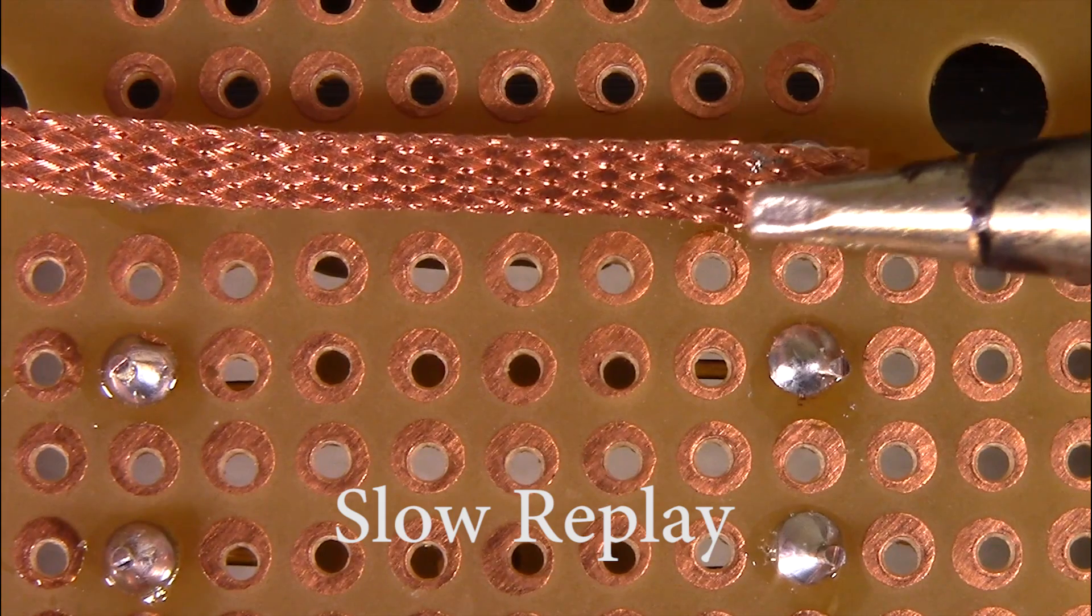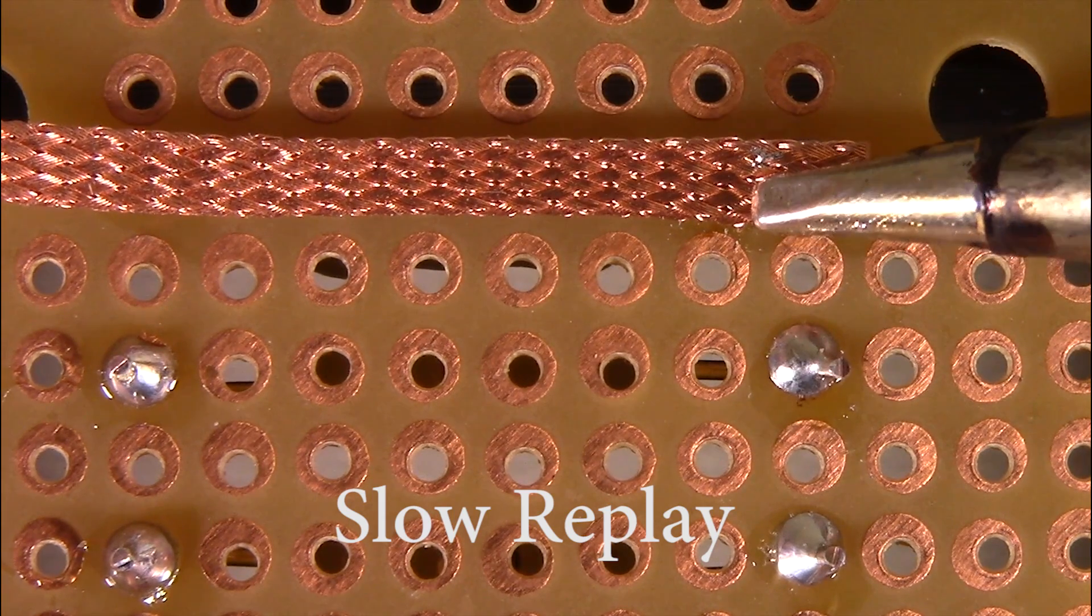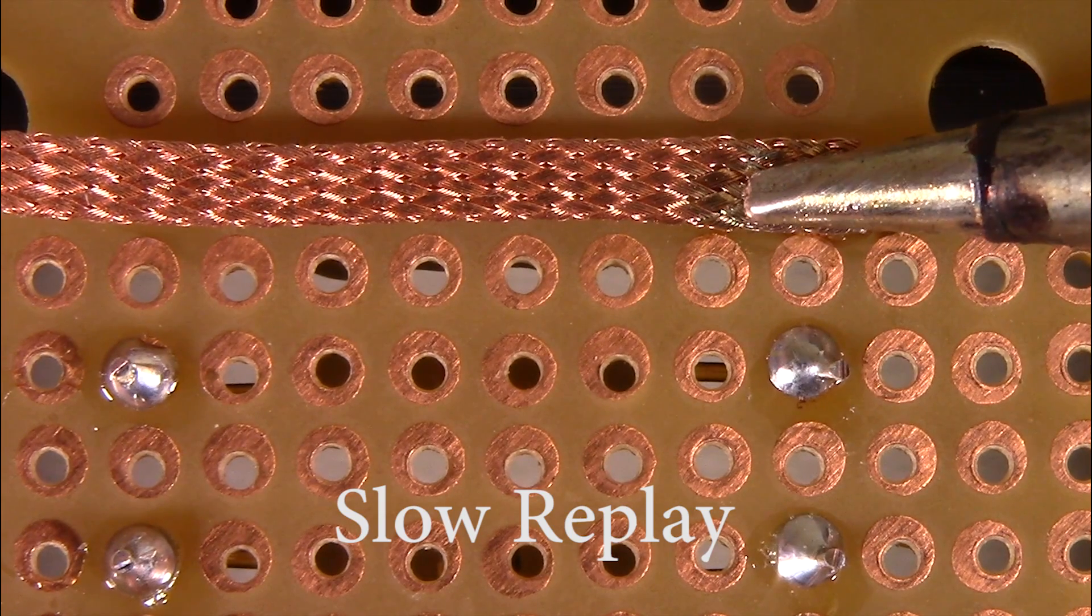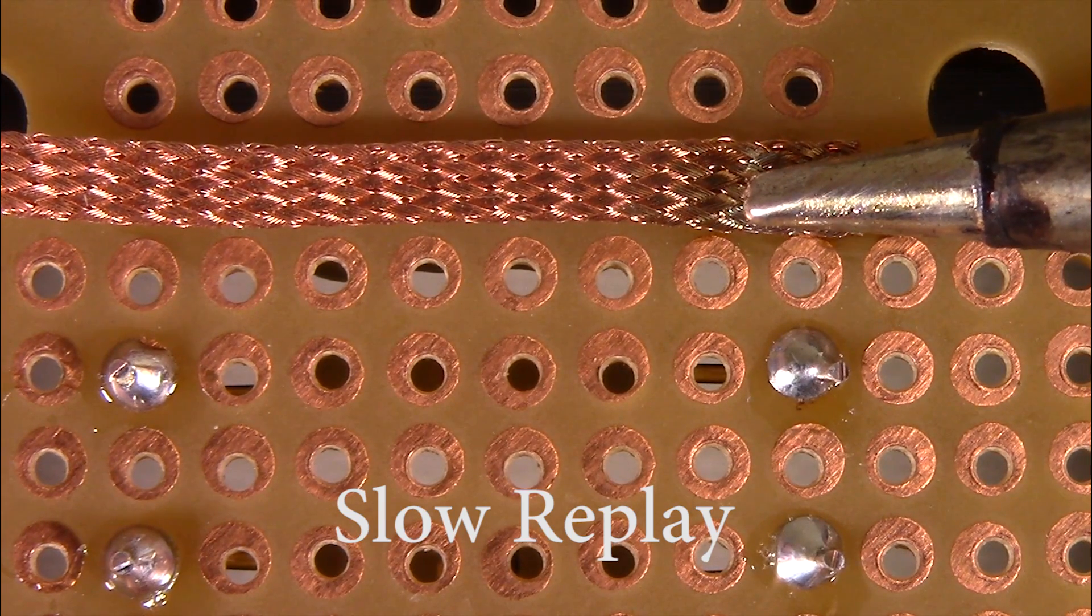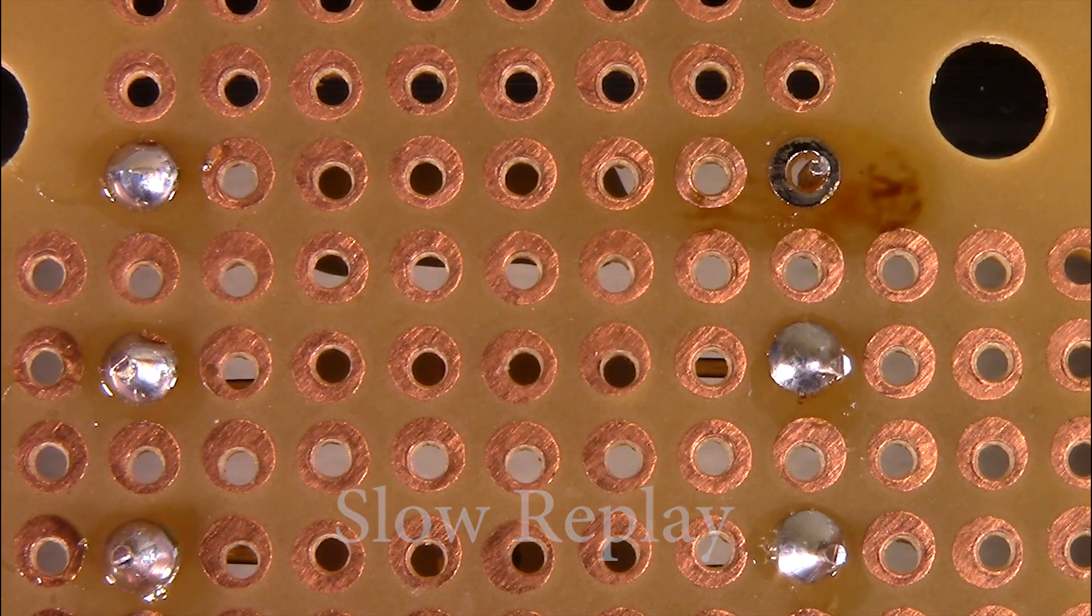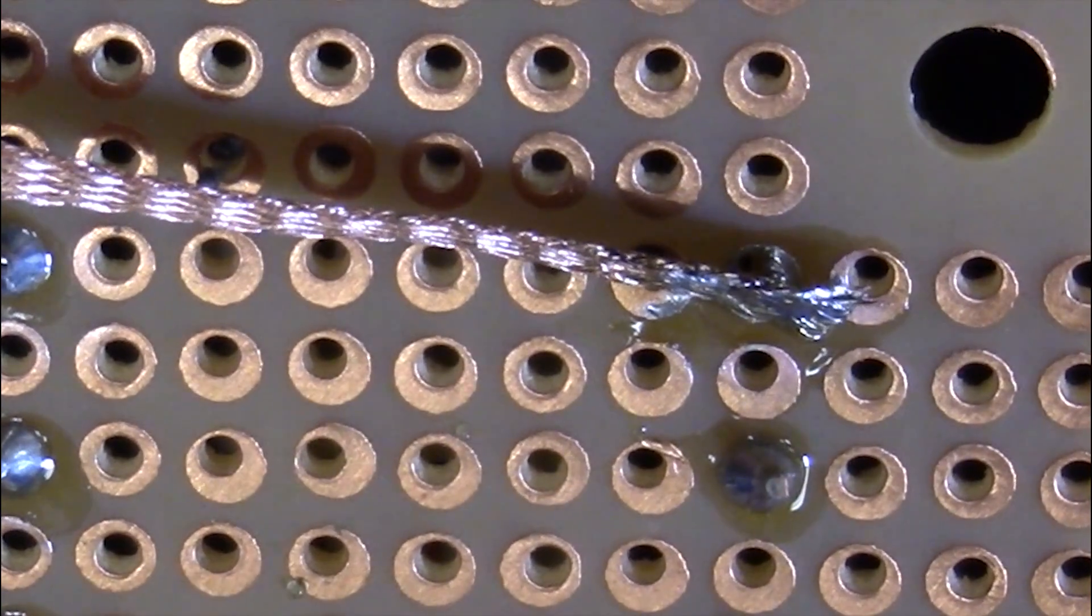You will feel the soldering iron push the wick into the solder as it melts. When the solder starts to melt into the wick, leave it for three more seconds and pull both the soldering iron and wick away at the same time. If you don't, you might solder the wick to the joint.